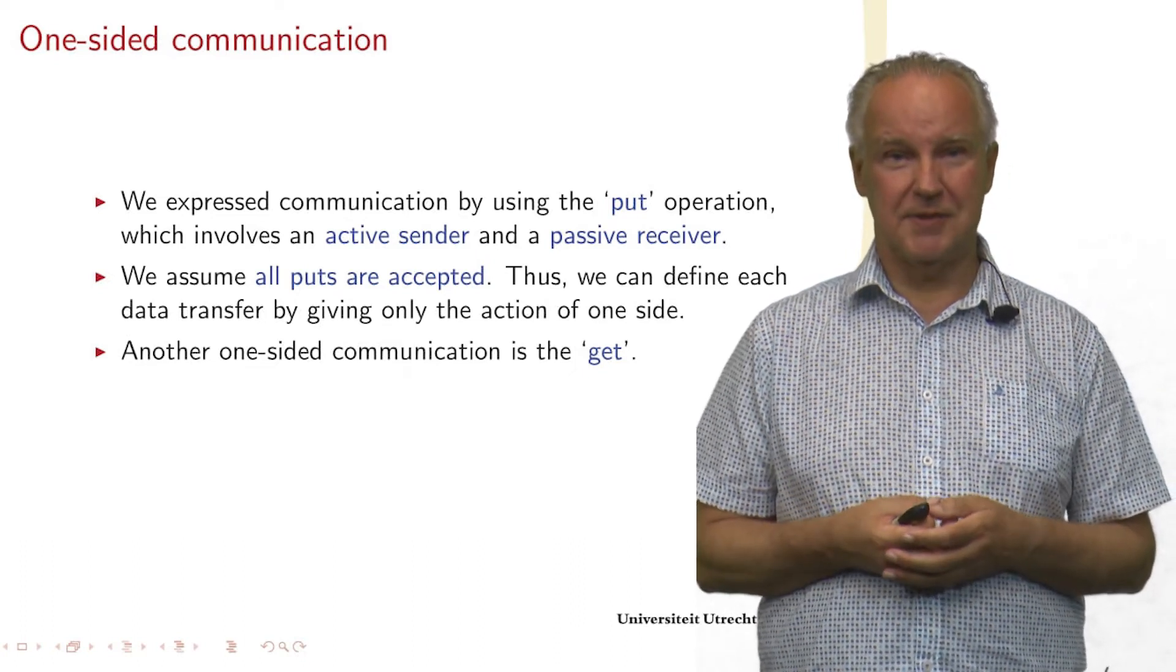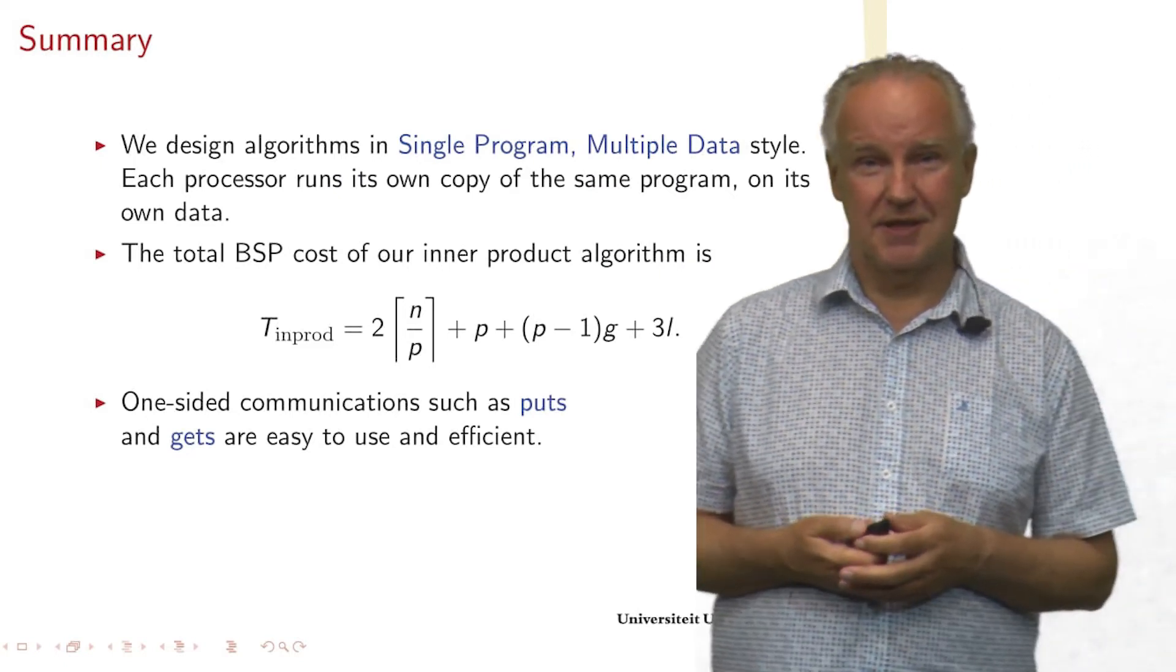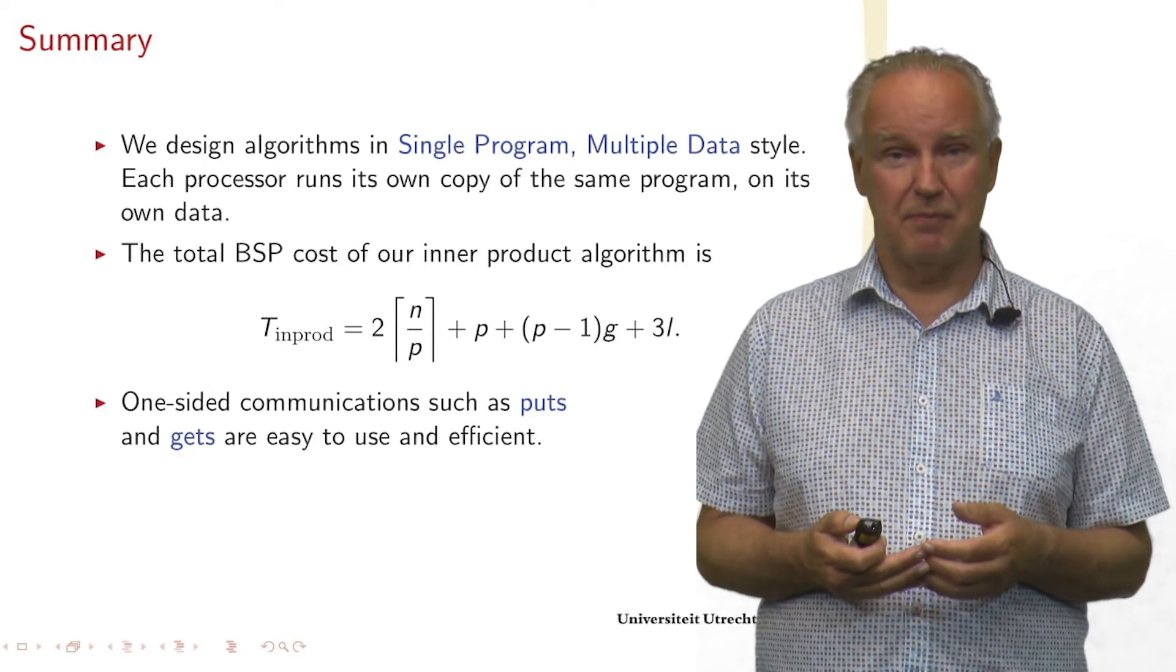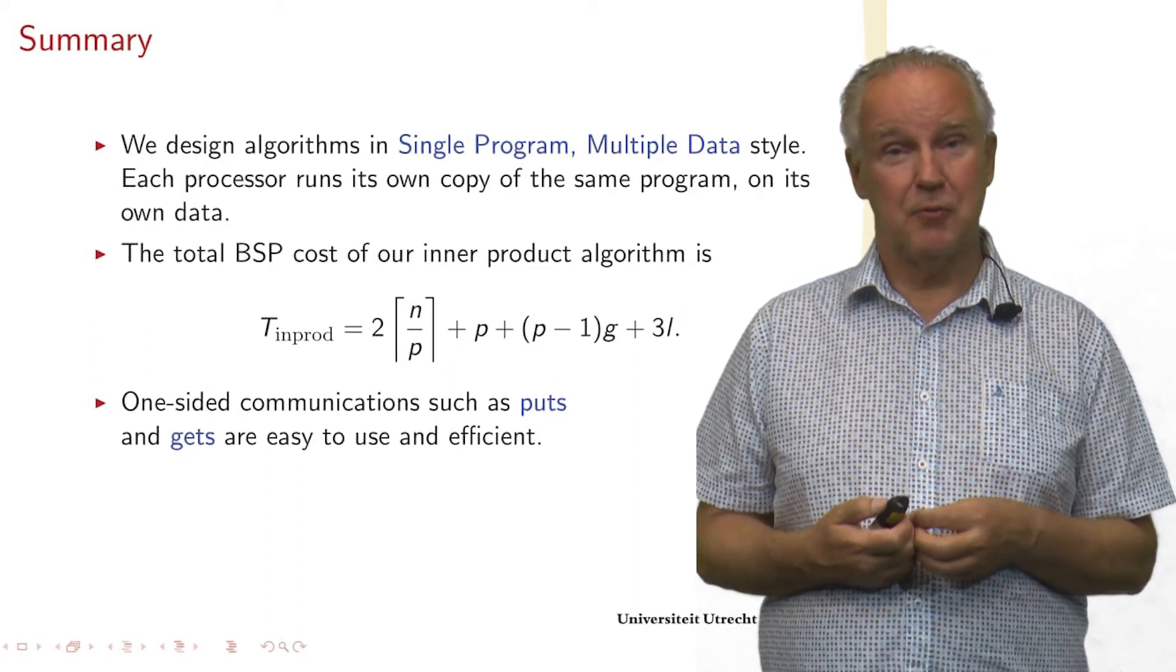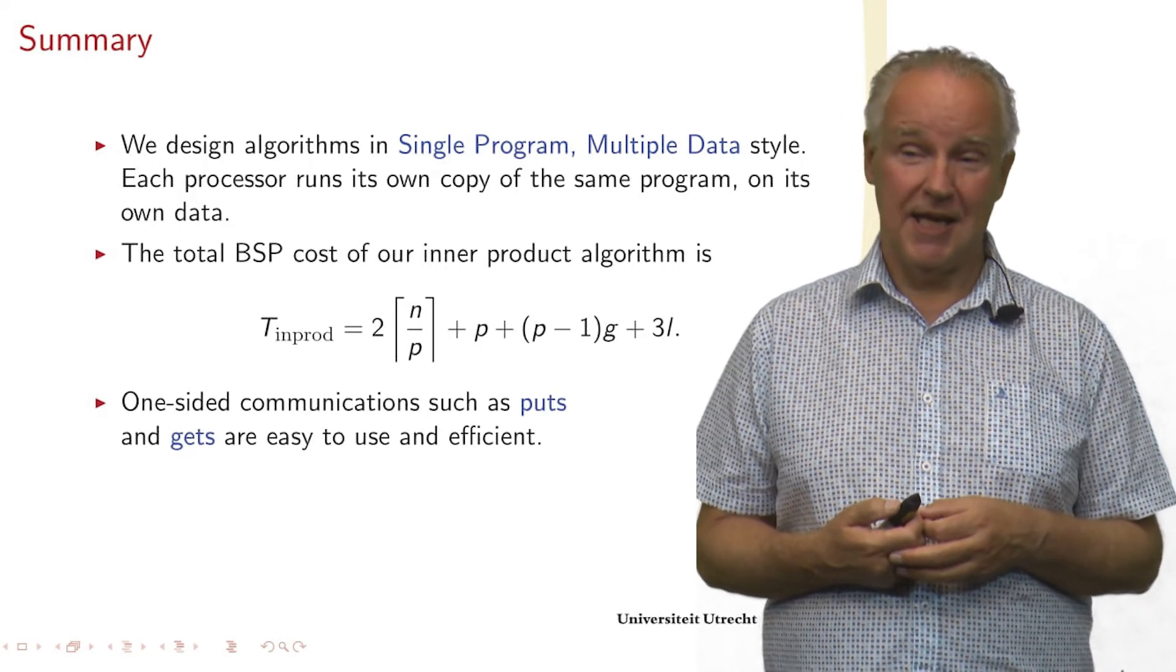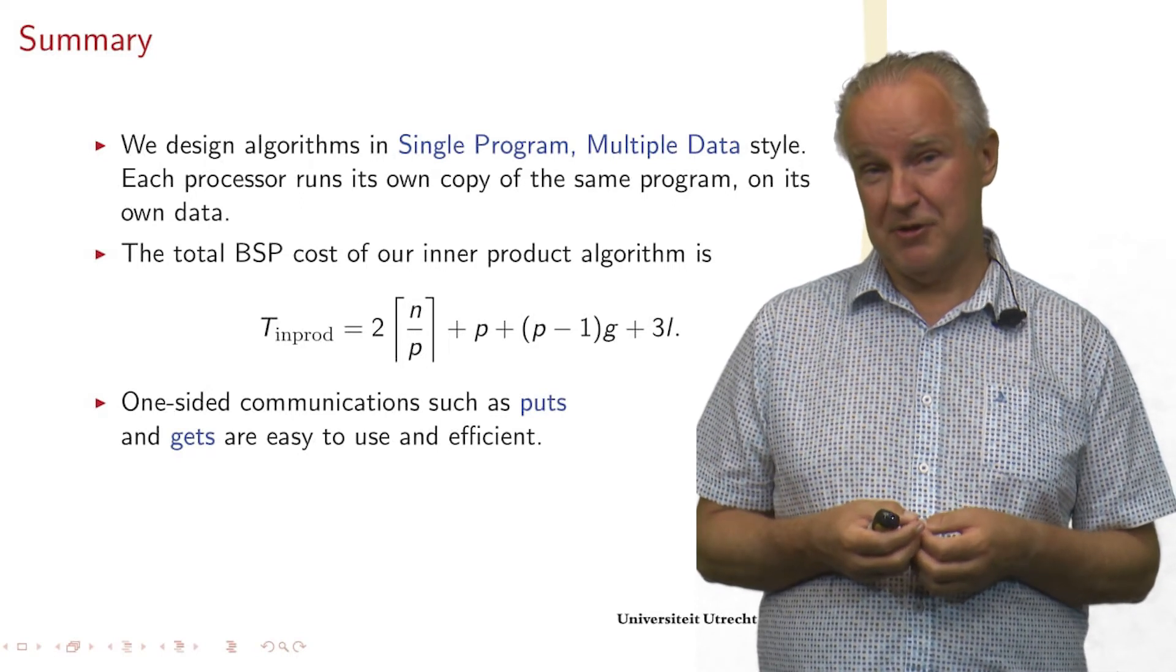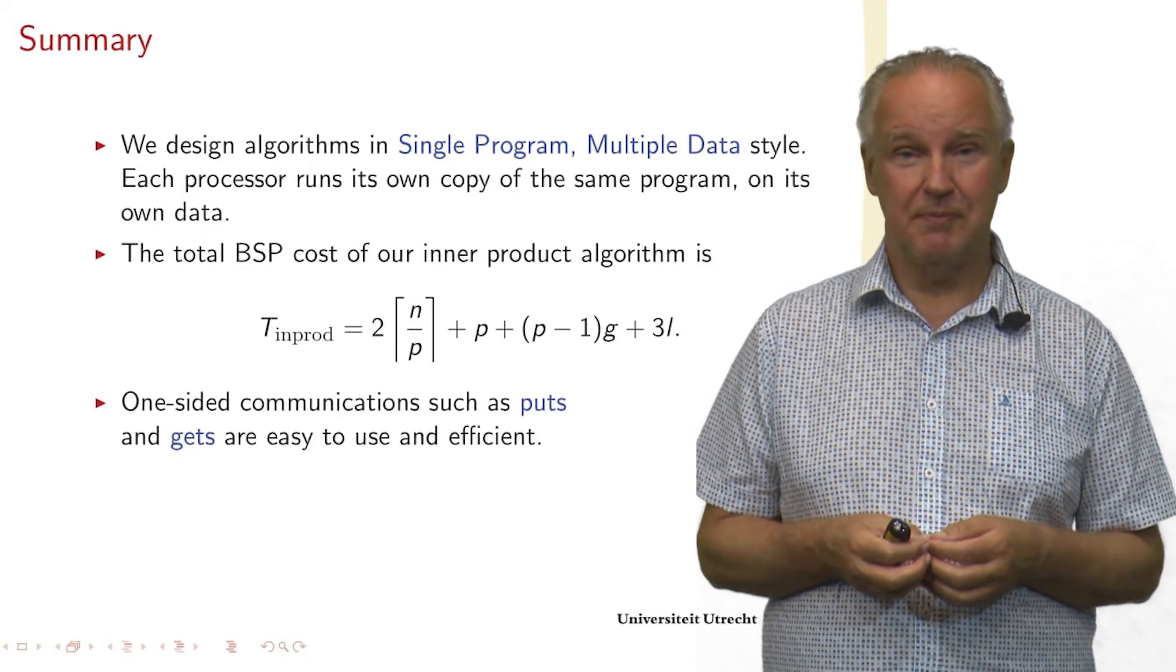So as a summary, we have seen that we can write a program in a style called SPMD, single program, multiple data. We obtained an efficient algorithm, which has a formula of the form A plus B, G plus C, L. And in this case, the A is the cost of the first super step and the last super step, because that's where we compute. And this cost is 2 times N divided by P, rounded up, plus P. P was the final summation.